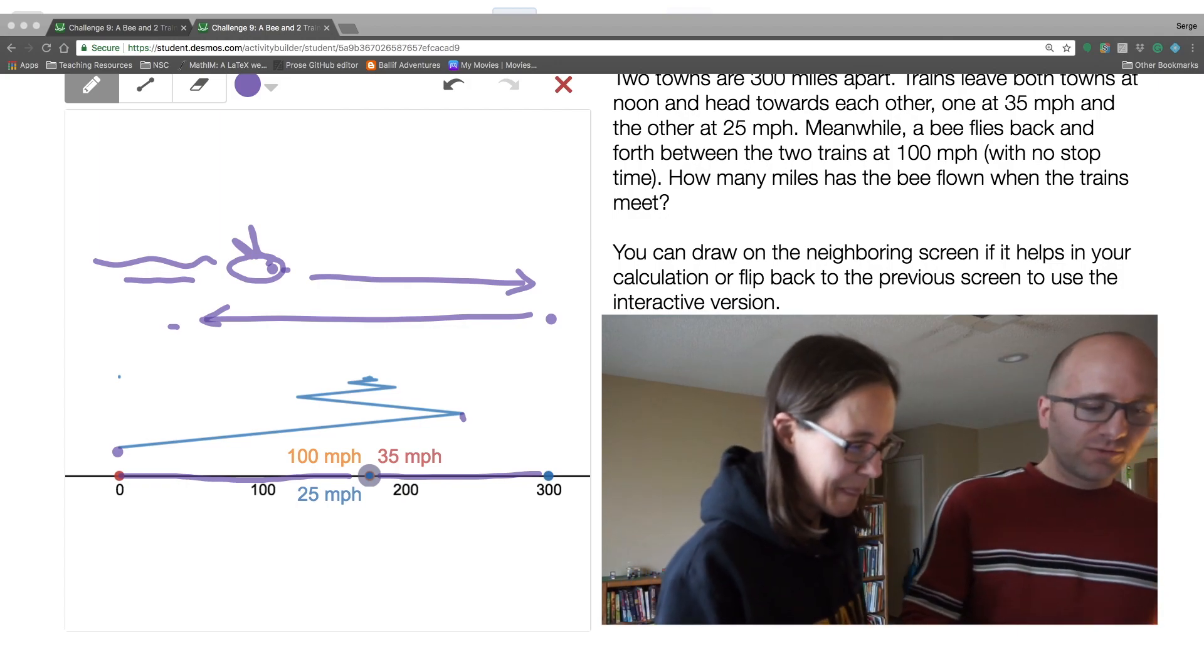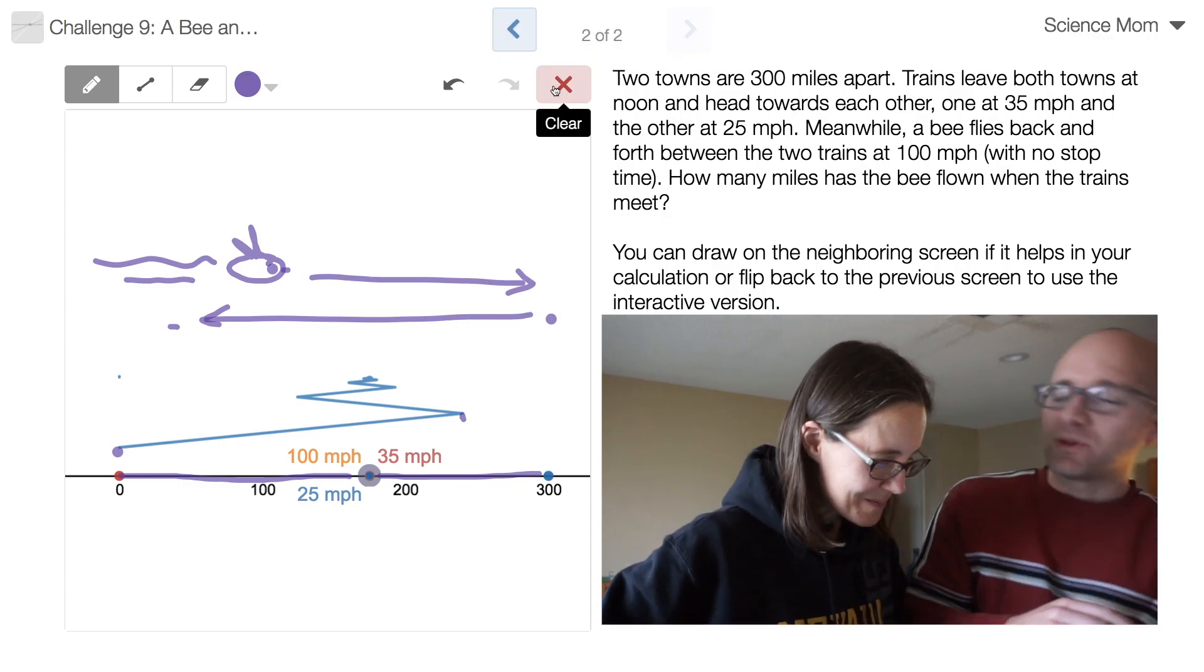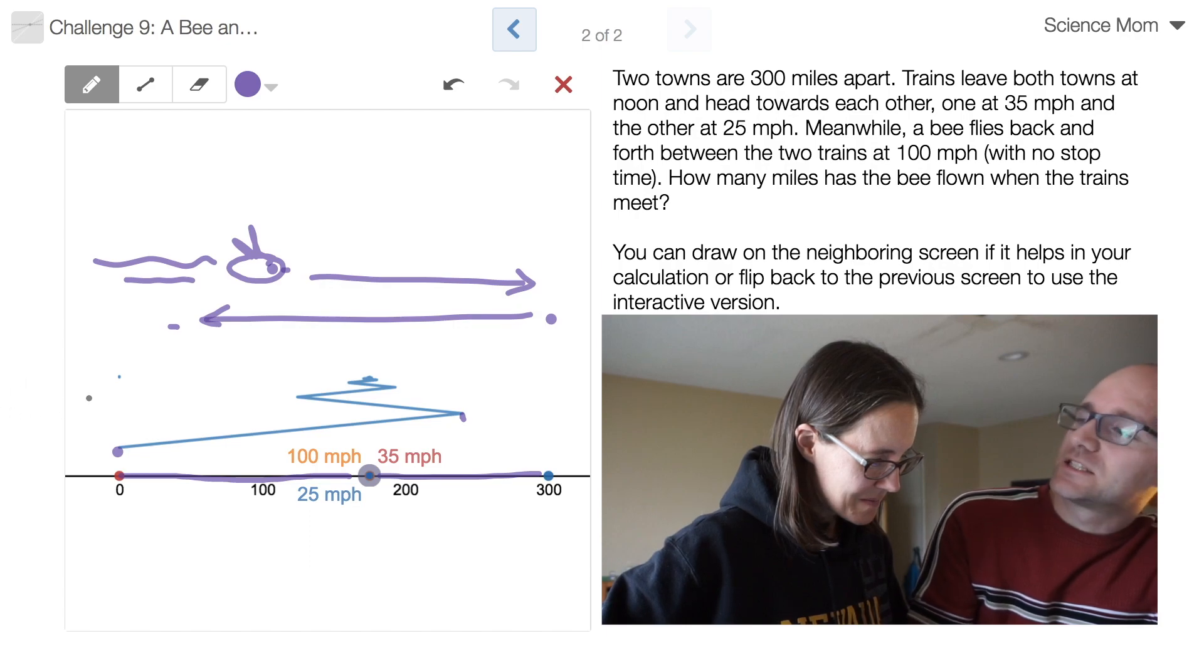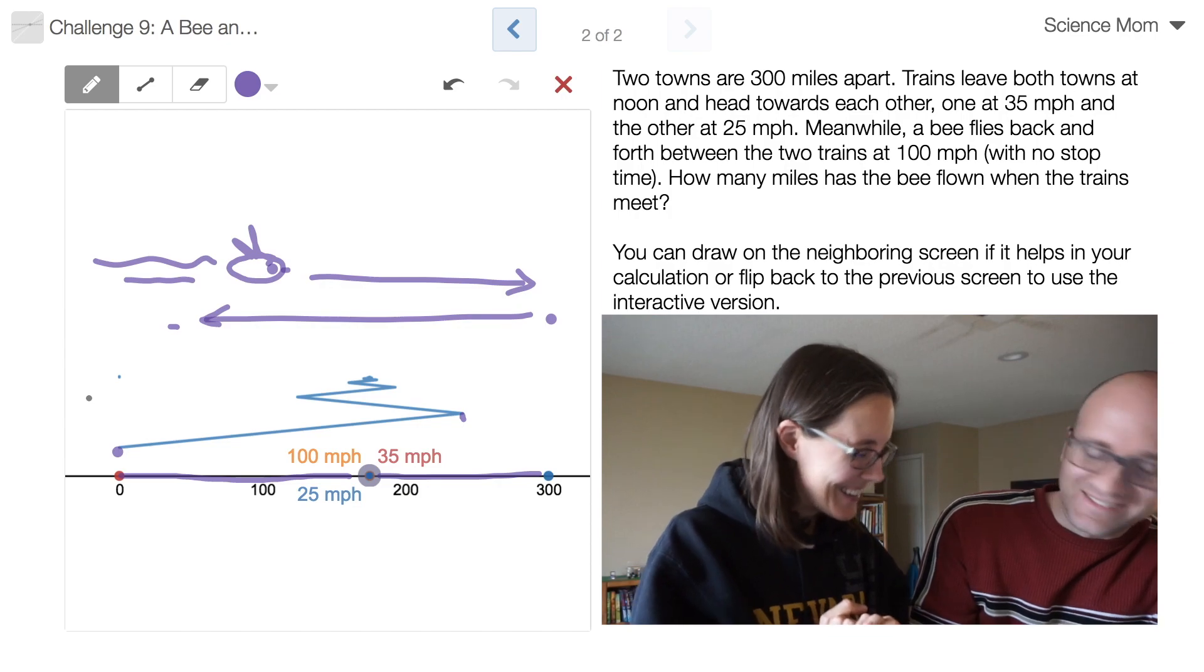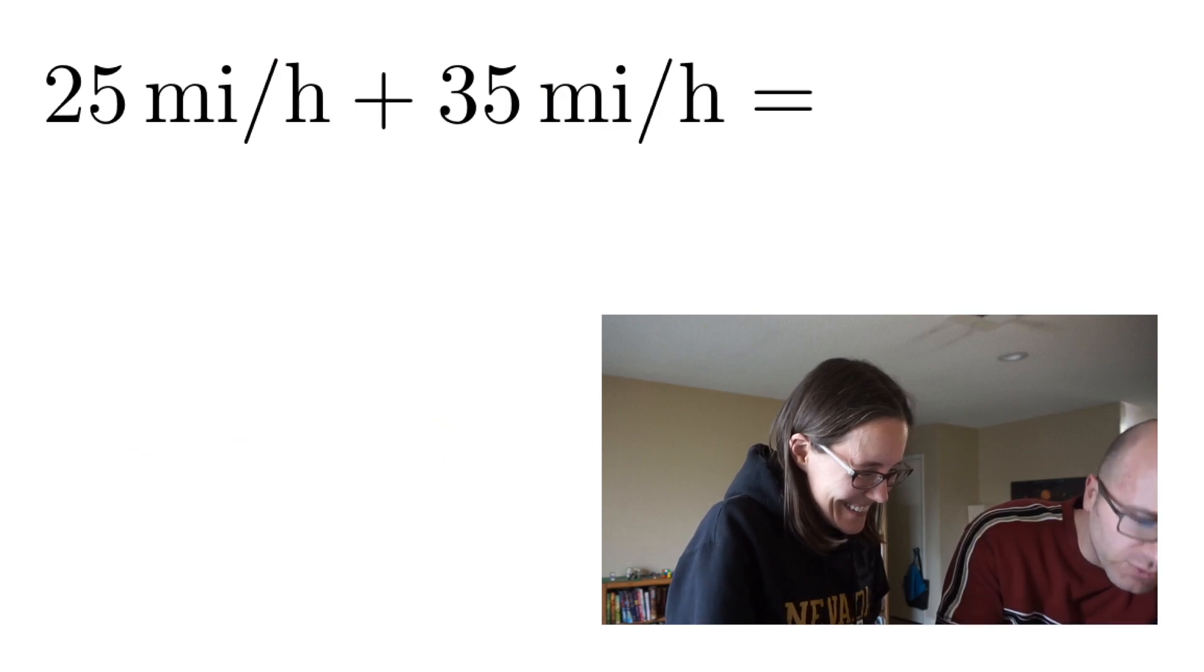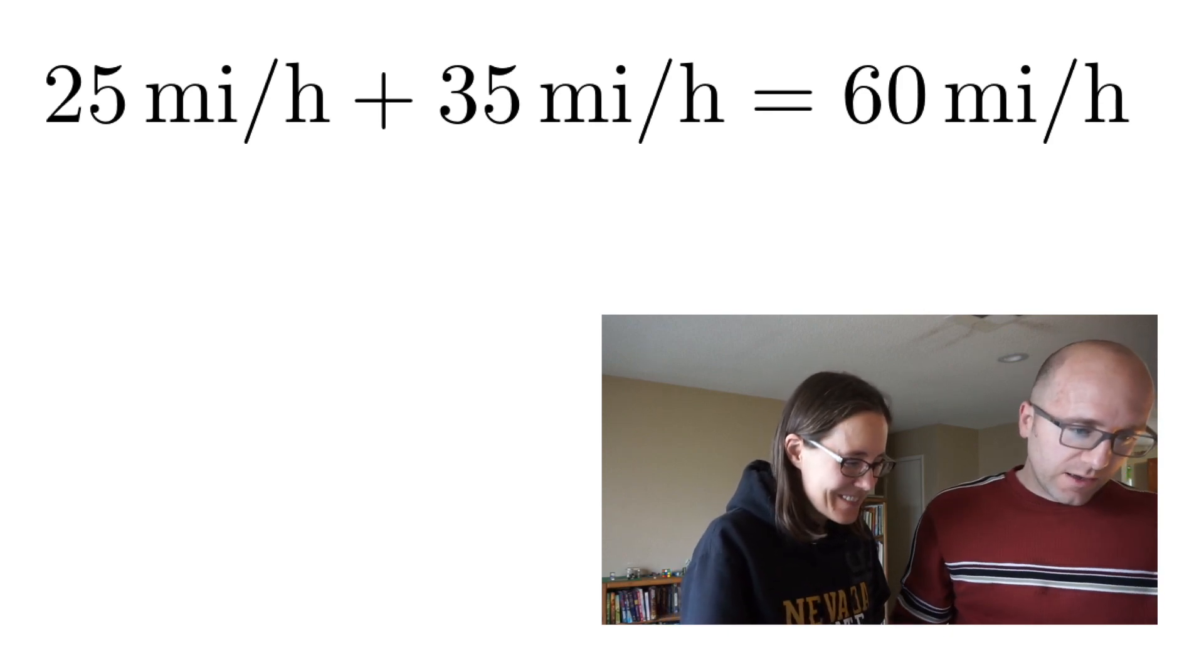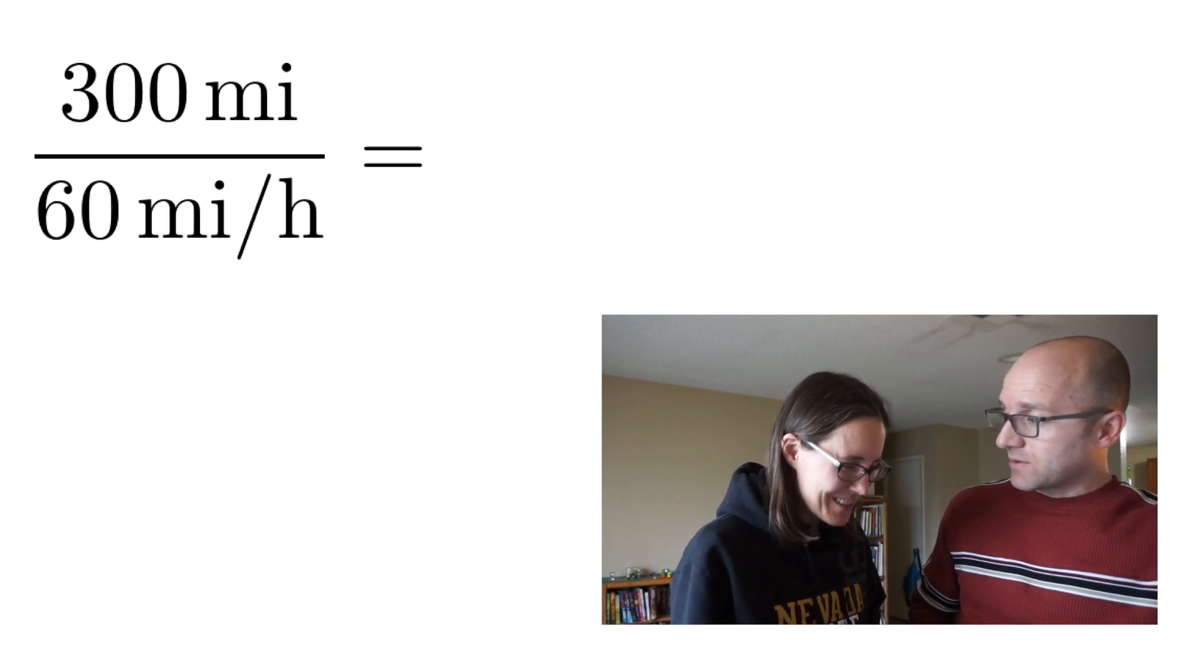So what was the shortcut on this one? Well, it sounds like a terribly complicated problem. However, if you just notice one thing, all you really need to know is how long it takes for the trains to meet. Oh my gosh! That's so cool! Yes, indeed. I love it! So, all together, one train's going 25 miles per hour, the other's going 35 miles per hour. So they're approaching at 60 miles per hour. If you add those two together, we've gotta go 60 miles per hour for a total of 300 miles. So how many hours would that take?